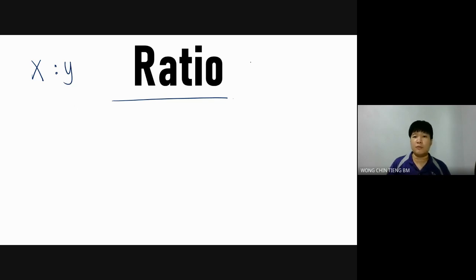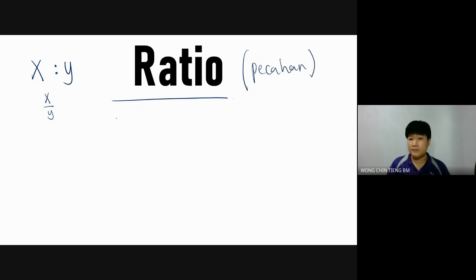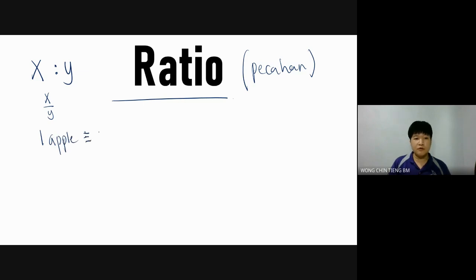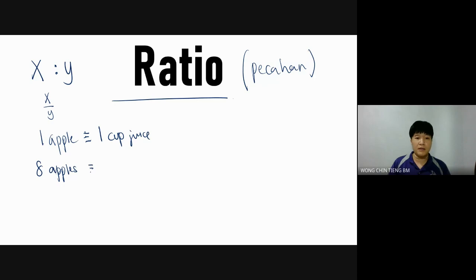Ratio is also pecahan — ratio sebenarnya adalah pecahan. X to Y is actually X over Y. So ratio means: if one apple gives you one cup of juice, how many cups if you have eight apples? With a one-to-one ratio, you will have eight cups.